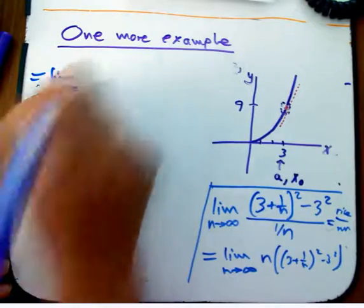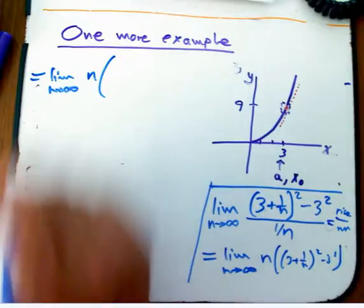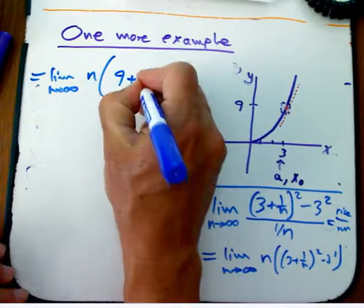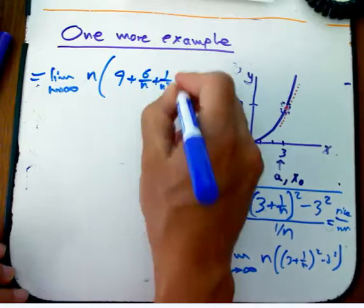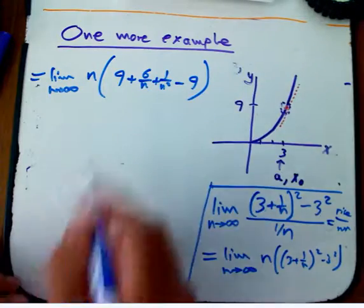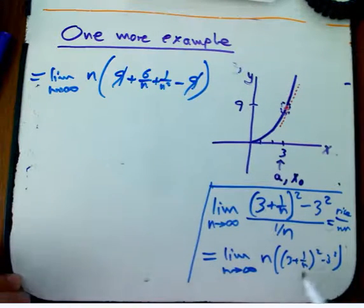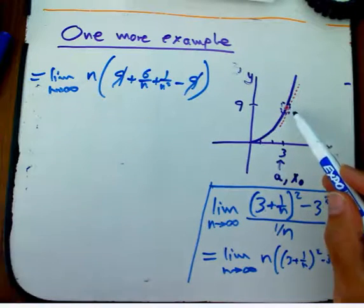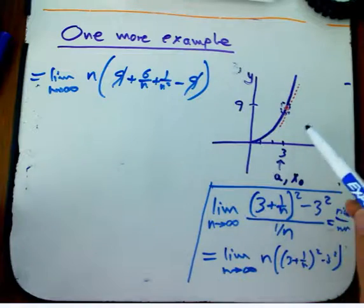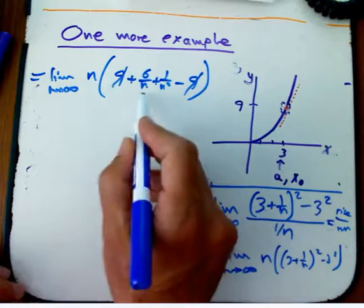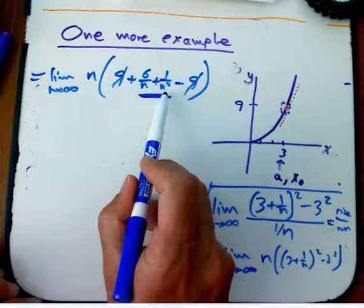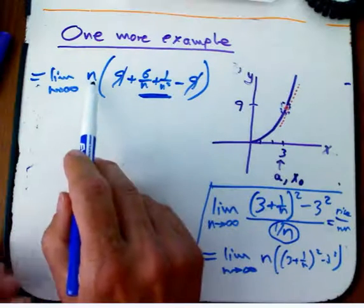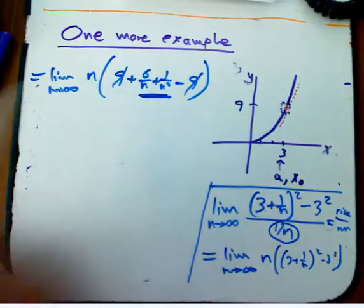So, limit as n goes to infinity of n times, let's expand that square out. A squared plus 2ab plus b squared. So, 9 plus 6 over n plus 1 over n squared minus 9. And not shocking, the 9's also cancel, because after all, this quantity is the rise. When n gets really, really big, I'm not going very far over. I shouldn't be going very far up unless this is a really bad function. It doesn't deserve to have a tangent line. And so, these 9's canceling out guarantees that this rise number. Notice that's very small if n is big, it's very big. And then I'm dividing it by the also small run number, 1 over n. But here I've simplified the algebra already so it ends up being multiplying by a big number.